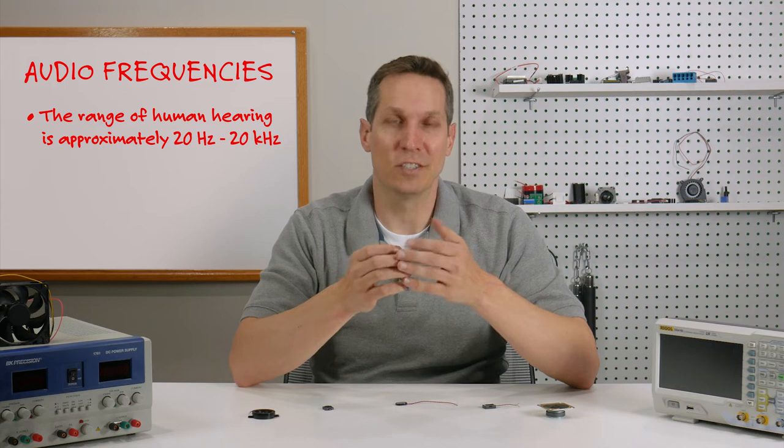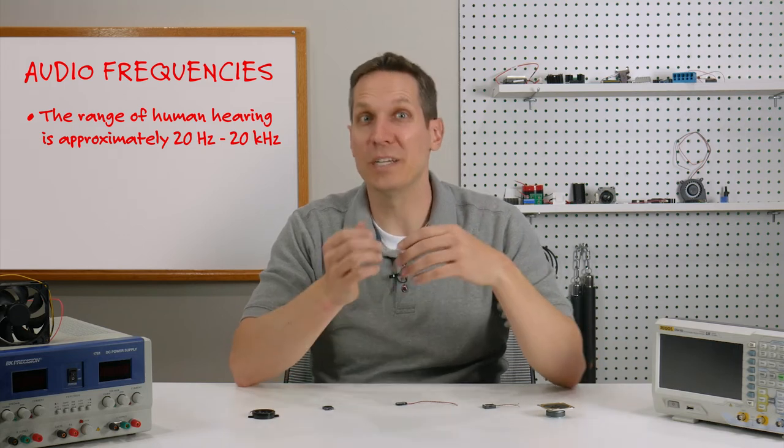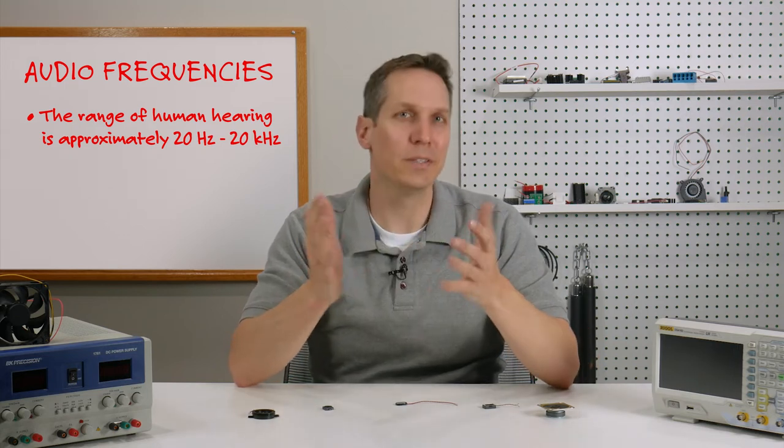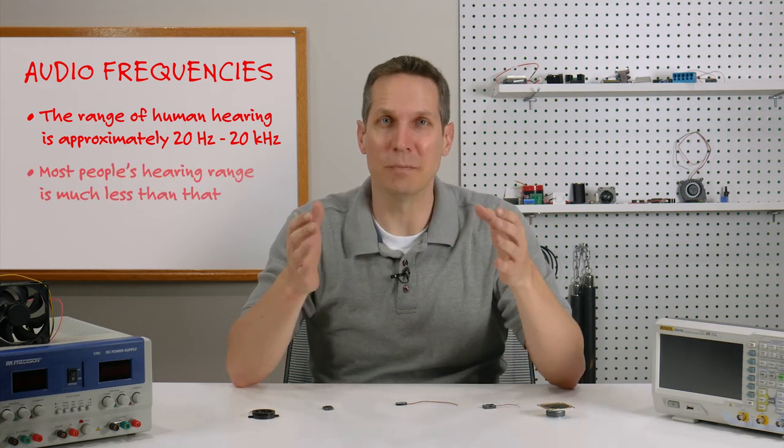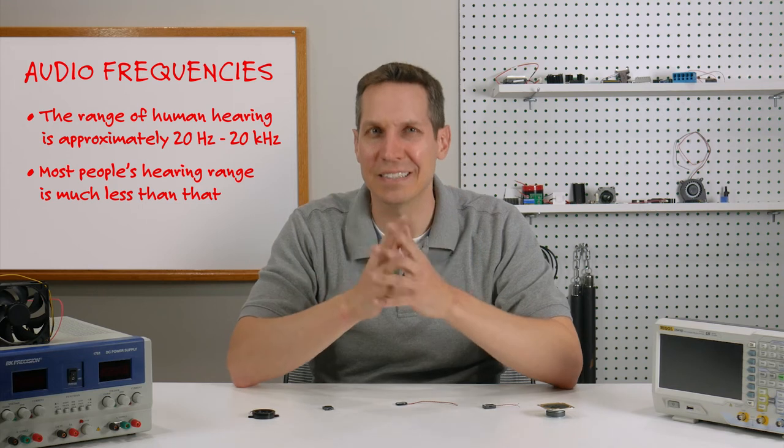Most people have heard that the human hearing range is from 20 Hz on the low end up to 20,000 Hz on the upper range, but that is actually just an approximation. Some people can hear in a larger range, but most people, especially as we get older, can hear much less than that.